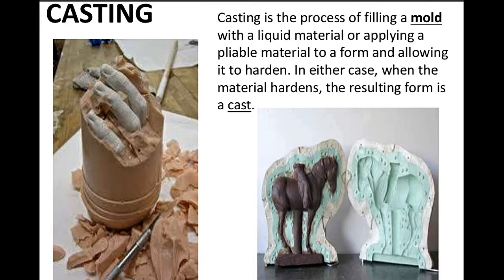Another type of sculpture is casting. Casting is the process of filling a mold with a liquid material, or applying a pliable material to a form and allowing it to harden. In either case, when the material hardens, the resulting form is a cast.